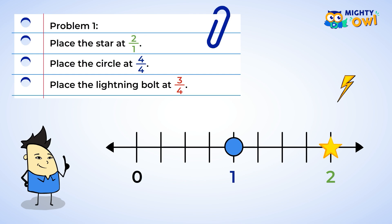Alright, last shape. The lightning bolt goes on three-fourths. Okay, the number line is split into four parts already, which means that, starting at zero, we can count one, two, three, and here is three-fourths.